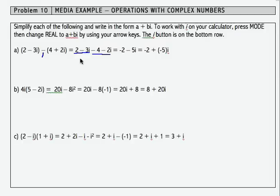Now I'm going to combine my like terms. The first are the 2 and the 4. That becomes minus 2. Then minus 3i minus 2i becomes minus 5i. I need to write that in a plus bi form. So here's a, that's the negative 2 part.